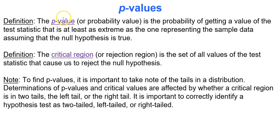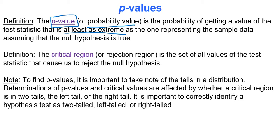The test statistic is used to find what is called a p-value. A p-value, or probability value, is the probability of getting a value of the test statistic that is at least as extreme as the one representing the sample data, assuming that the null hypothesis is true. Basically, it's looking at what's the probability our test statistic is likely. So we use the test statistic to find the p-value.